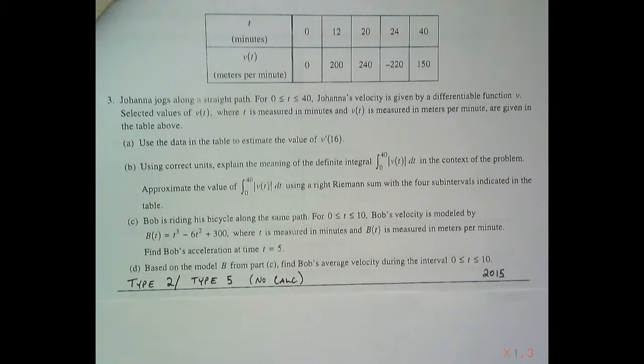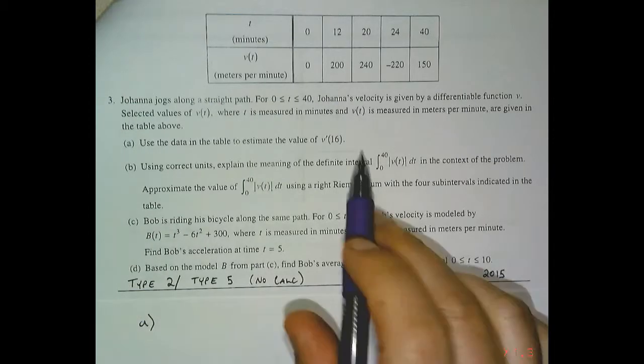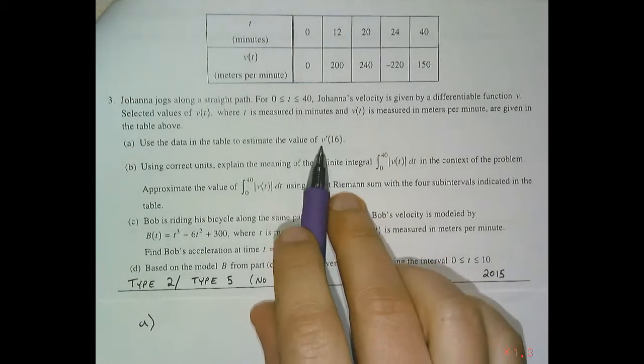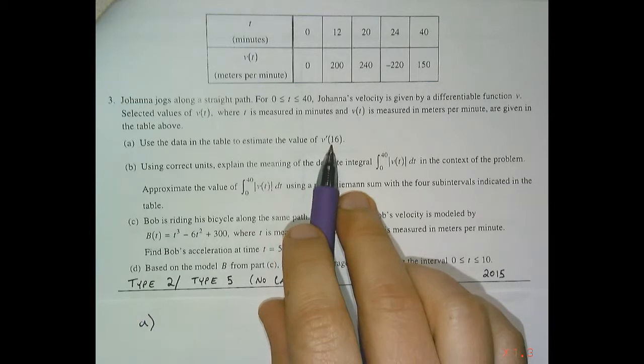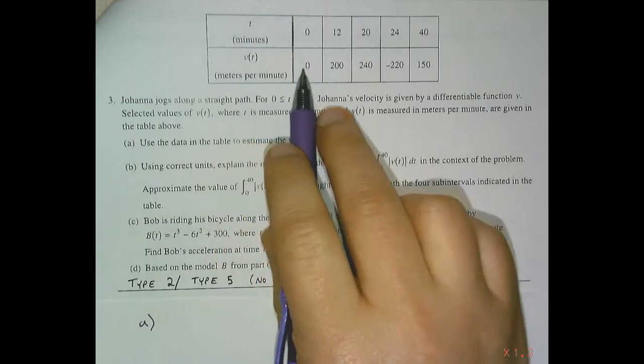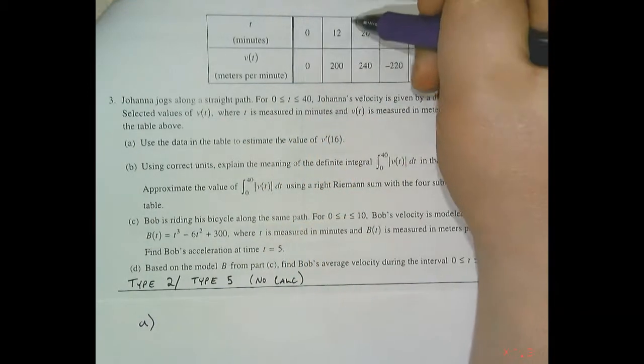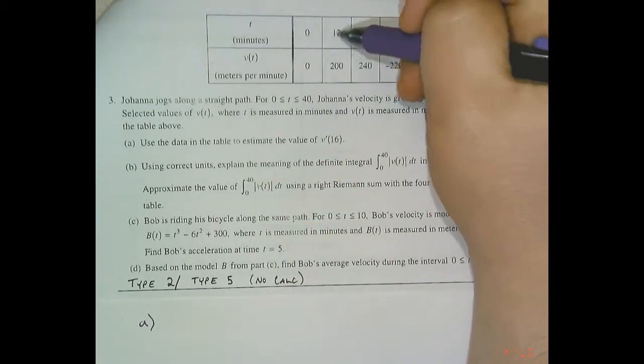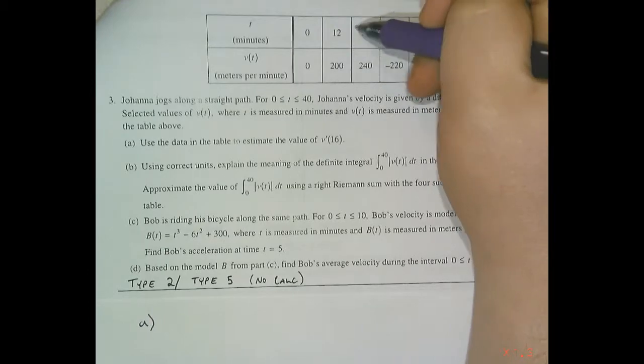Question one says use the data in the table to evaluate or estimate, I should say, v prime of 16. So this is saying what is the slope of velocity, i.e. what is acceleration at 16. Because we don't have an equation, we're using the table and 16 is not on the table, so we use the two closest points and do an average rate of change.